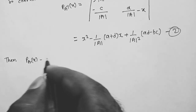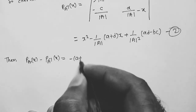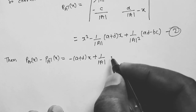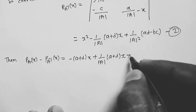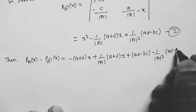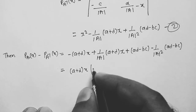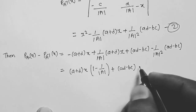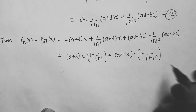P_A(x) minus P_{A⁻¹}(x) equals: the x squared terms cancel, leaving minus(A plus D)x plus (A plus D)x divided by det(A), plus AD minus BC, minus (AD minus BC) over det(A) squared. This simplifies to (A plus D)x times (1 over det(A) minus 1) plus (AD minus BC) times (1 minus 1 over det(A) squared). This is equation number 3.